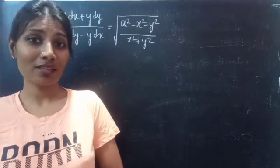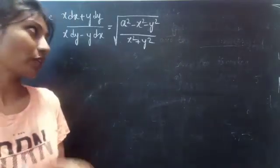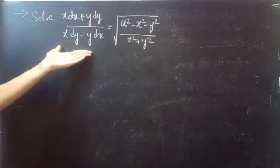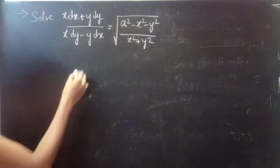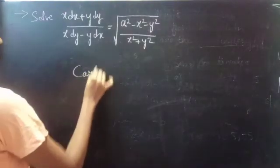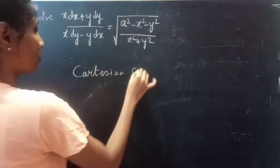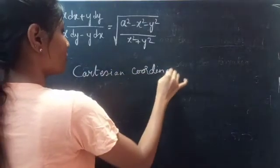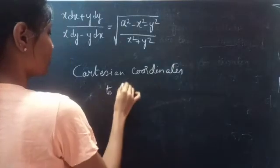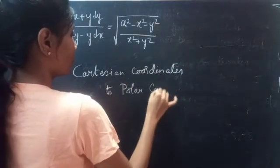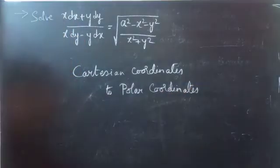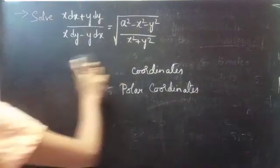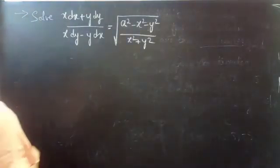Hello everyone, this is Jay Kalpana here. In this video we are going to see how to reduce the given differential equation to variable separable by changing Cartesian coordinates to polar coordinates. We are going to convert the Cartesian coordinates into polar coordinates to reduce the complexity of the problem. So let's get started.